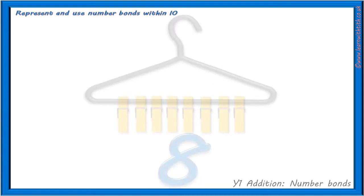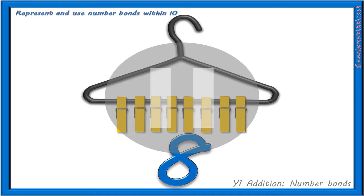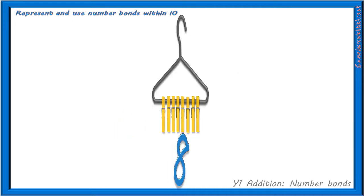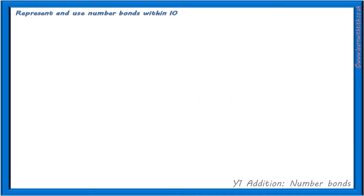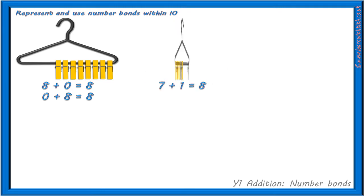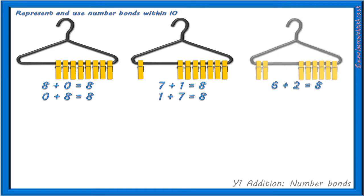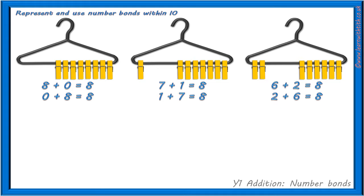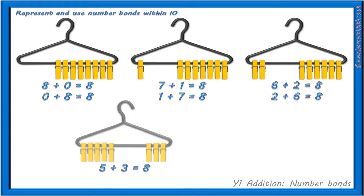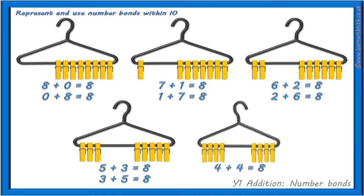Now try working with 8 pegs. 8 pegs gave us: 8 add 0 equals 8, 0 add 8 equals 8, 7 add 1 equals 8, 1 add 7 equals 8, 6 add 2 equals 8, 2 add 6 equals 8, 5 add 3 equals 8, 3 add 5 equals 8, and 4 add 4 equals 8.